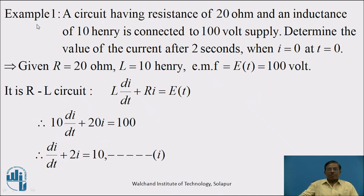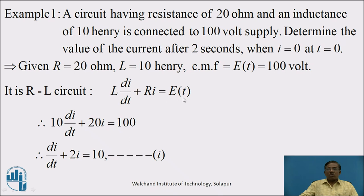Example 1: A circuit having resistance of 20 ohm and an inductance of 10 henry is connected to a 100 volt supply. Determine the value of current after 2 seconds when I = 0 at T = 0. Given: R = 20 ohm, L = 10 henry, and E(T) = 100 volt. Since this is a RL circuit, we start with its differential equation: L·dI/dt + R·I = E(T). Substituting values: 10·dI/dt + 20I = 100.